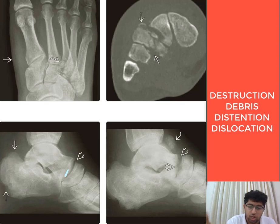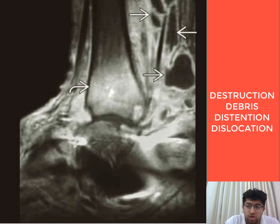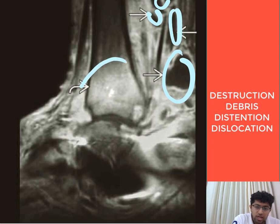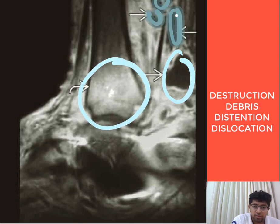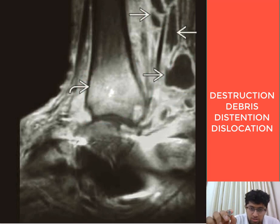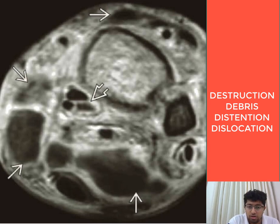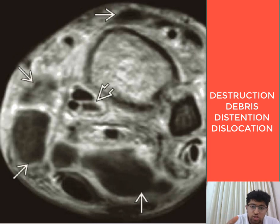On the contrast-enhanced image, there are collections with debris within and around the joint, along with enhancement at the distal end of the tibia. On the axial image, multiple collections are seen around the ankle joint in the soft tissue and around the tendon sheaths.